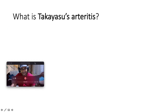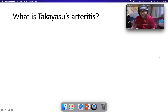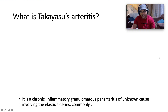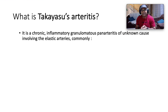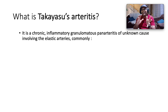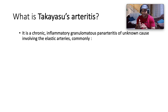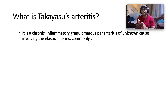What is Takayasu arthritis really? It is a chronic inflammatory granulomatous panarteritis — by pan, we mean it involves all three layers: the tunica intima, tunica media, and tunica adventitia.